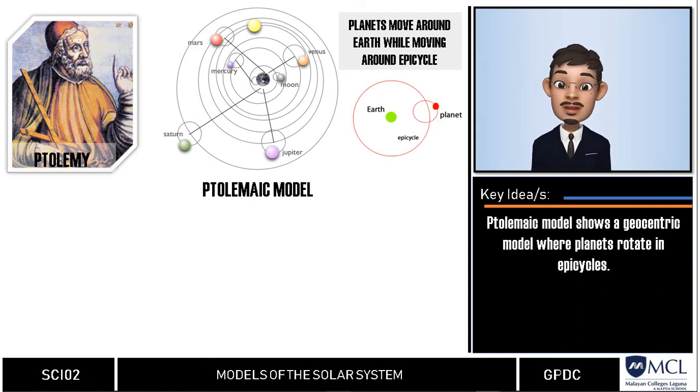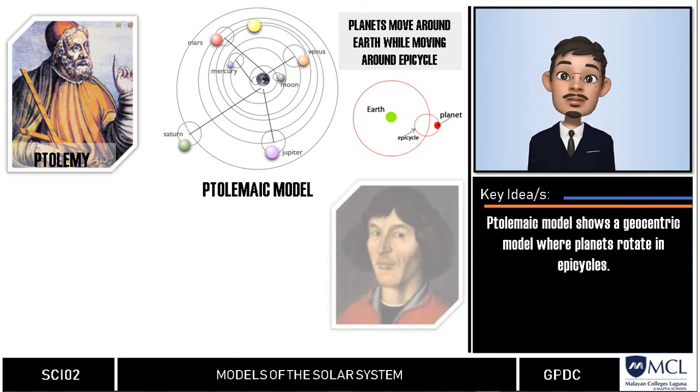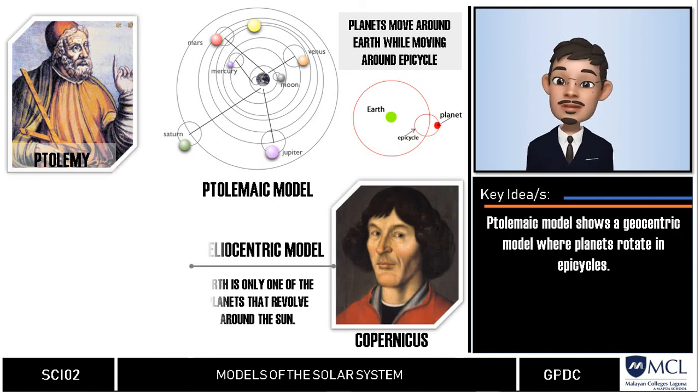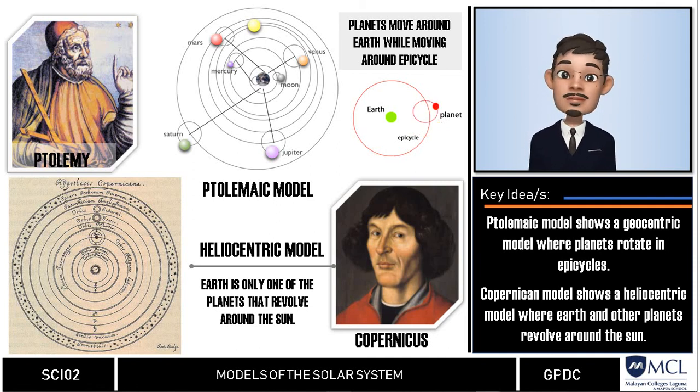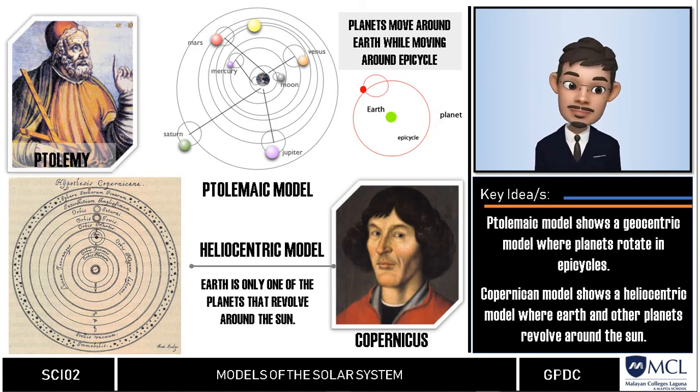In 1543 the sun-centered model of the solar system which was originally introduced by Aristarchus was reintroduced by Nicholas Copernicus. In this model he explained that the earth is only one of the many planets that revolve around the sun and that the earth spins around its own axis. During that time the Catholic church rejected the heliocentric model. With this, Copernicus presented a mathematical model that provided an easier mathematical system for the calculation of the planet's trajectory movement which we will discuss in the next video.